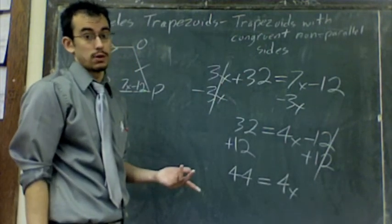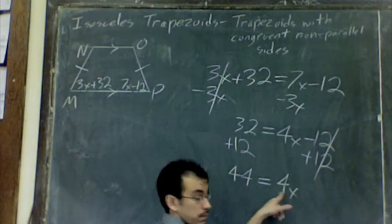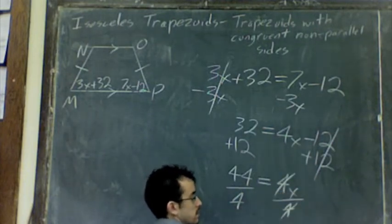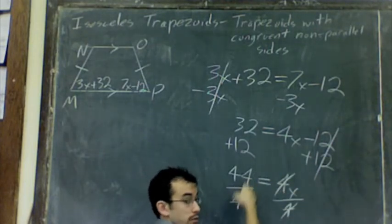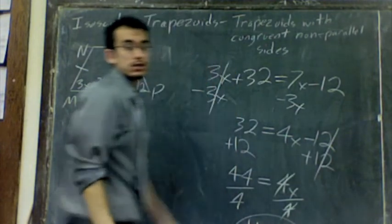Your last step, as per usual, divide by the coefficient. Divide by 4. The 4 is canceled. You get X is 44 divided by 4 is 11.